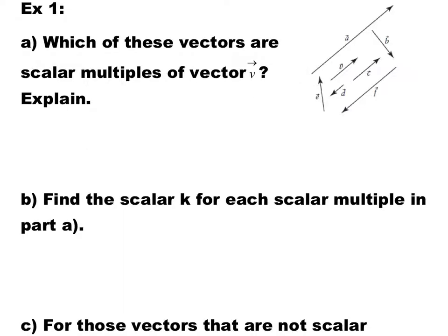In the first example, we have a set of vectors A, B, C, D, E, F, and V. The question is: which of these vectors are scalar multiples of vector V? You can see that vector A, vector C, vector D, and vector F are going to be parallel to vector V. So this means that these vectors are scalar multiples of vector V, because they are parallel.